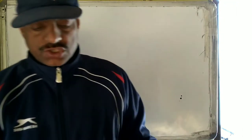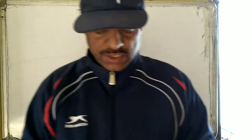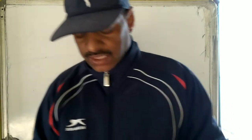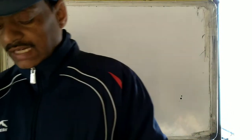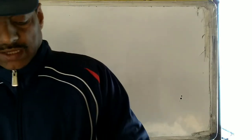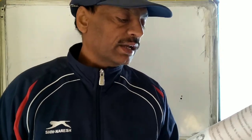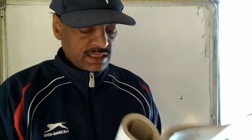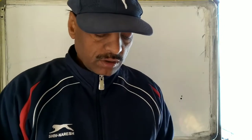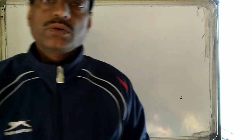Hello students, let us start the remaining questions of Exercise 8.3. Question number 9: find the amount which Ram will get on rupees 4096 if he gave it for 18 months at 12 and a half percent per annum, interest being compounded half-yearly. Two things must be done: the interest is compounded half-yearly, and with the rate and time also adjusted accordingly.